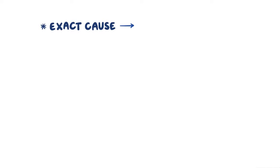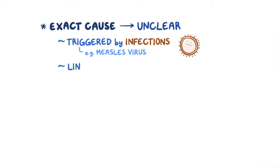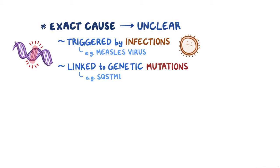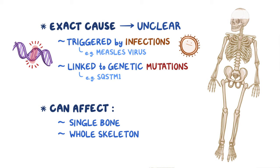The exact cause of Paget's disease of bone is unclear, but it can get triggered by infections like the measles virus, and is linked to genetic mutations like the SQSTM1 mutation which encodes a protein involved in regulating osteoclasts. When Paget's disease of bone occurs, it can affect a single bone or the whole skeletal system. Most often, it involves the skull, lumbar vertebrae, the pelvis, and the femur.